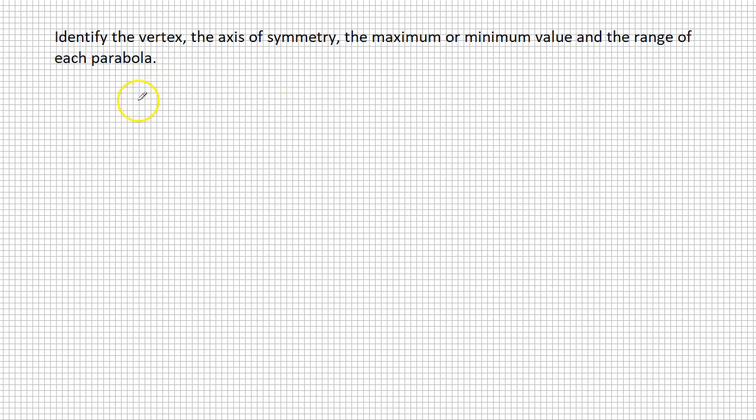What is different about these is these parabolas are going to be in standard form. Standard form is y equals a times x squared plus b times x plus c. The parabola we are going to be looking at is y equals x squared plus 6x plus 9.